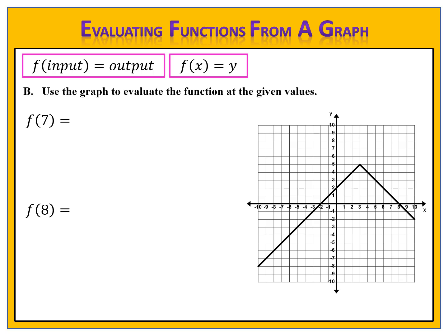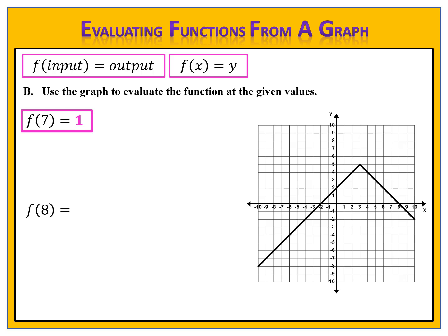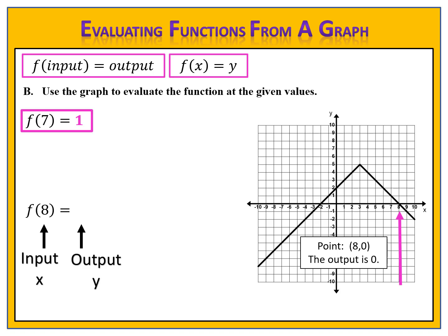Let's compare our answers. We start with f of 7: f of input equals output — we know the input is 7 and want to find the output. We go to the graph where the input is 7 and see the point (7, 1), so f of 7 equals 1. For f of 8: the input is 8, we find the point (8, 0), so f of 8 equals 0.